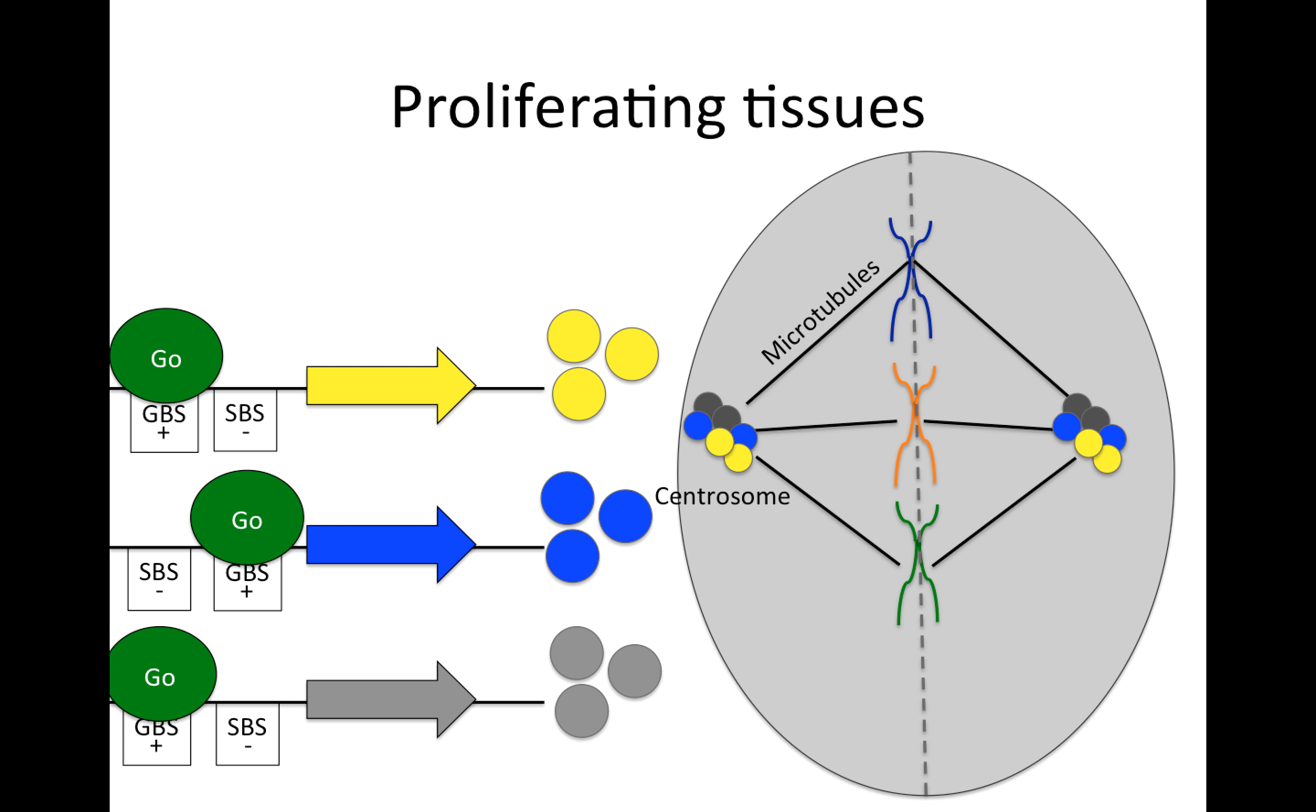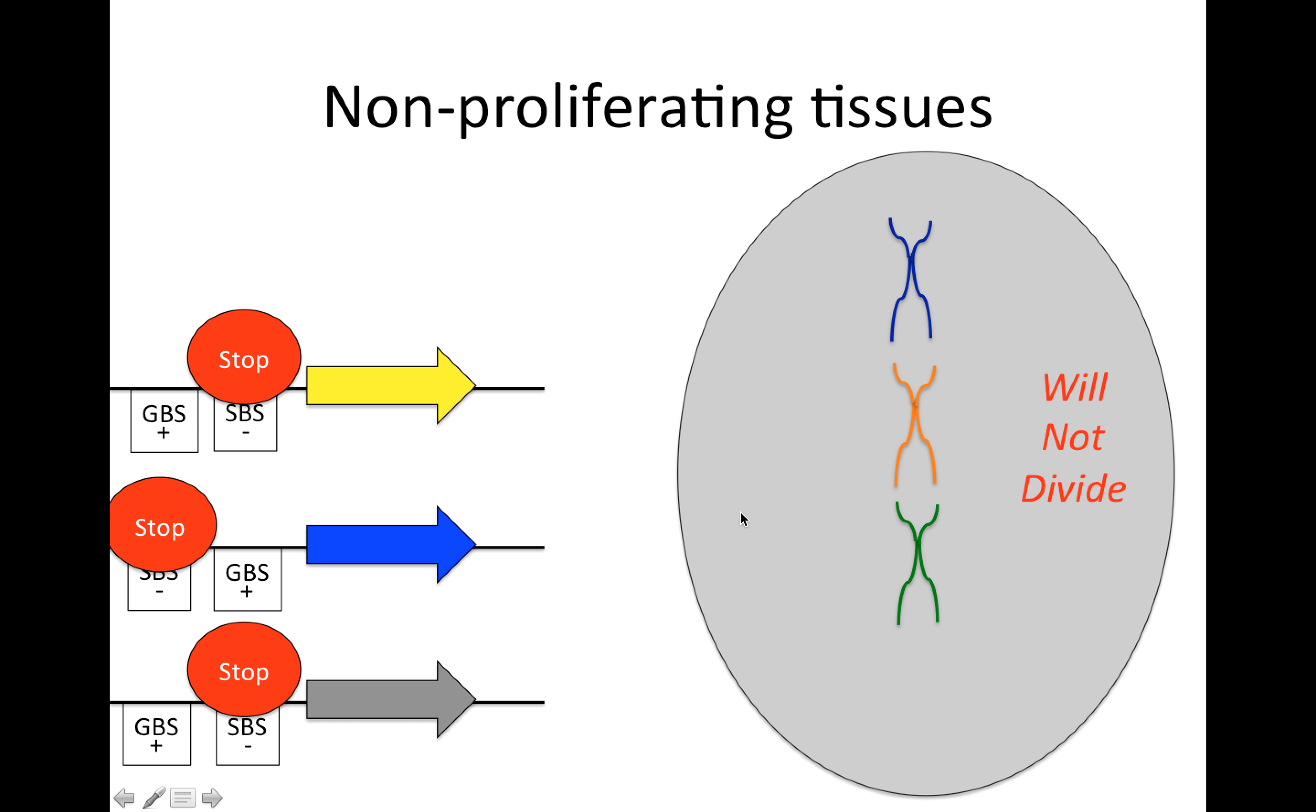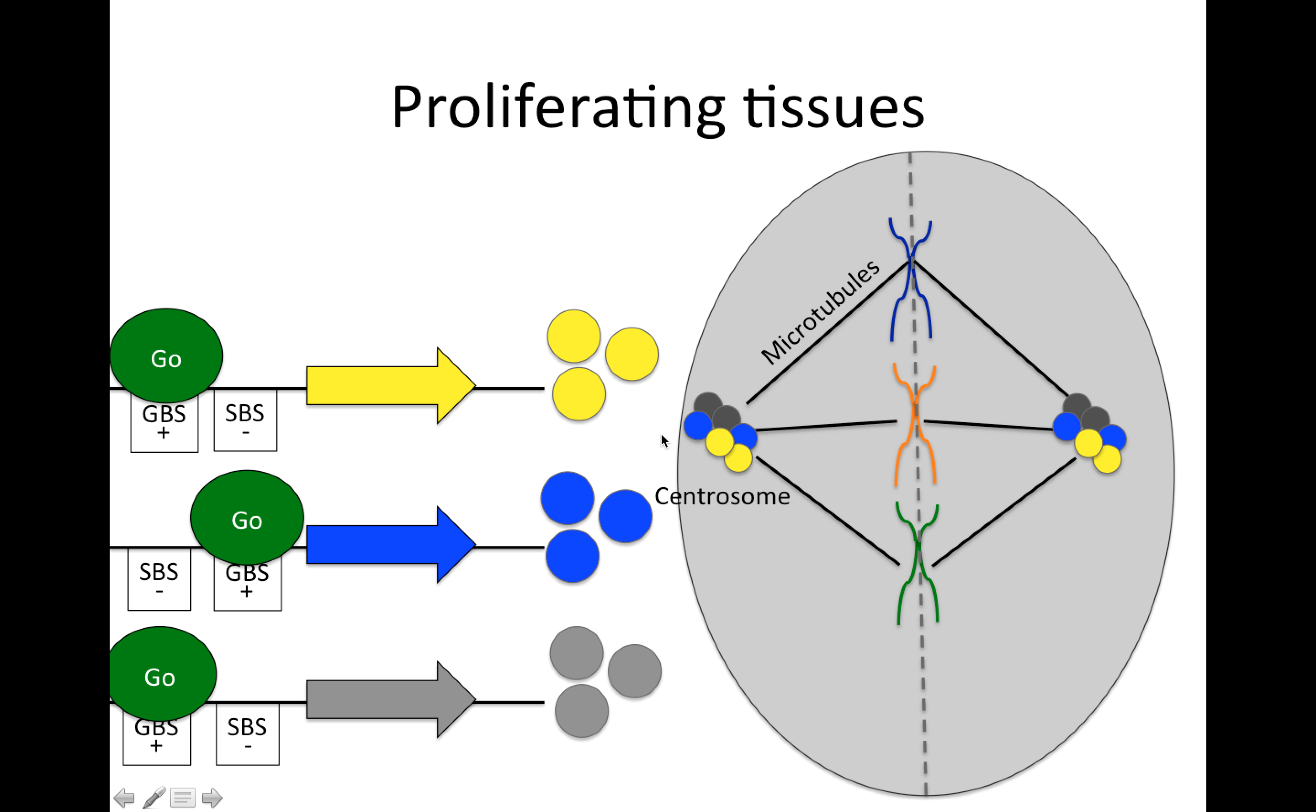So in proliferating tissues, that means that we'll have the go state with things on and actively undergoing mitosis, whereas in non-proliferating tissues will be in the stop state. And I'm simplifying things somewhat because we don't want to have the centrosome on the whole time. So even in proliferating tissues, the centrosome will get produced and then divide, and then we'll have to wait until we duplicate our DNA, and then produced and divide again.